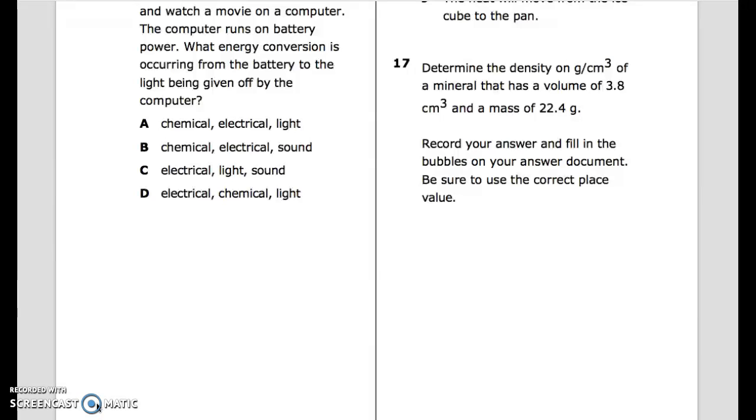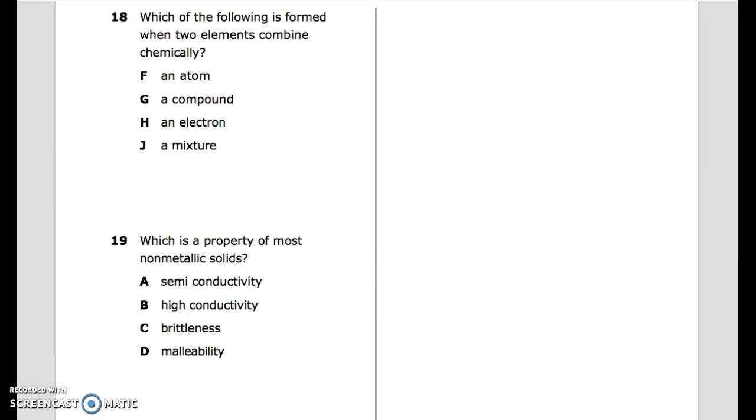Number 17: Determine the density in g/cm³ of a mineral that has a volume of 3.8 centimeters cubed and a mass of 22.4 grams. Record your answer and fill in the bubbles on your answer document. Be sure to use the correct place value. Question 18: Which of the following is formed when two elements combined chemically? F. An atom. G. A compound. H. An electron. J. A mixture.